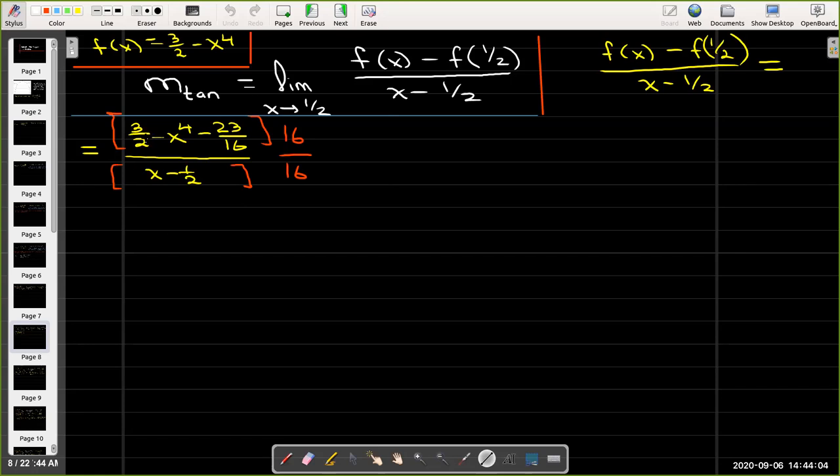So the first thing I'm going to do after replacing f(x) with the formula for f(x) and f(1/2) with the value 23/16 is clear the fractions by multiplying the numerator and denominator by 16. After I clear the fractions, I'm going to collect like terms and start to factor. I can see right away that the denominator has a common factor of 8.